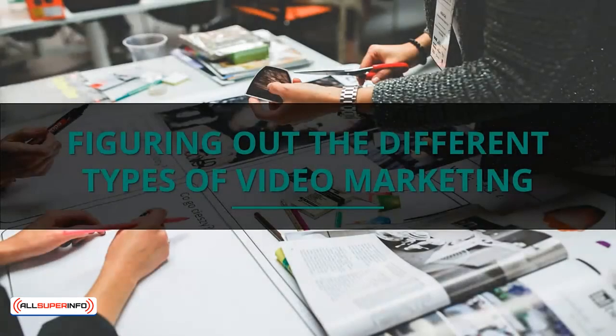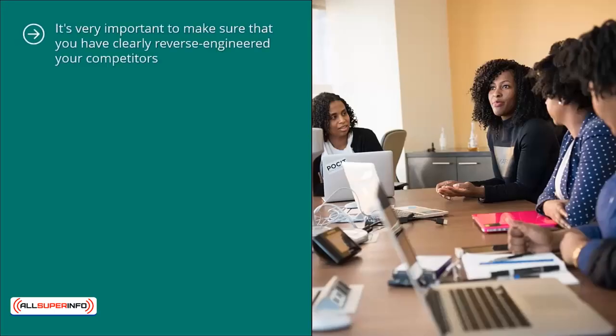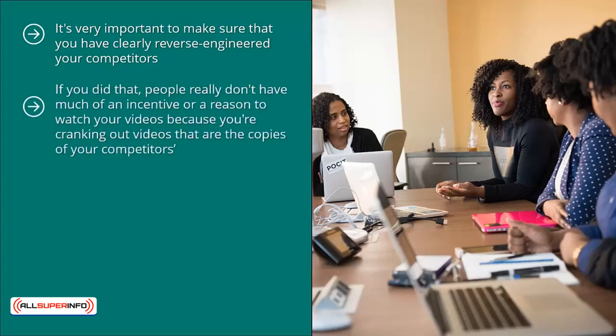When figuring out the different types of video marketing, it's very important to make sure that you have clearly reverse engineered your competitors. If it turns out that they are cranking out a specific type of video, you need to follow suit. You don't have to copy and paste exactly what they're doing — if you did that, people really don't have much of an incentive or reason to watch your videos because you're cranking out copies of your competitors. Why watch your stuff when they can watch your competitors that are probably better known and have better brands?